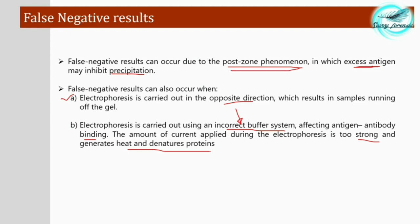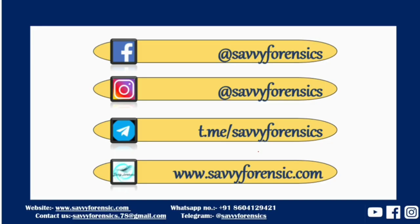The proteins referred to here are the antiglobulins — antibodies — which are proteins, as are the antigens. These will become denatured when heat is generated in the medium. That covers the complete procedure of counter-immuno-electrophoresis.